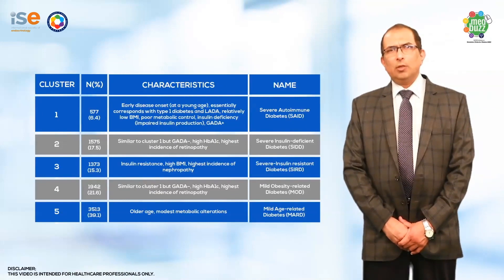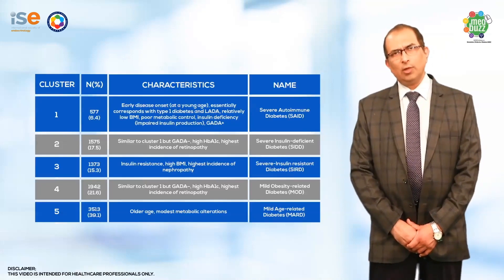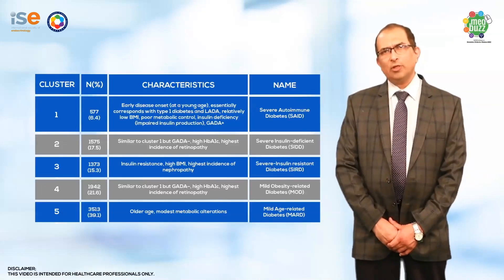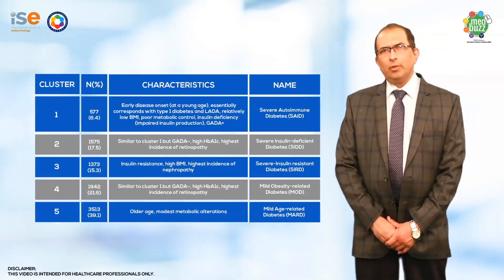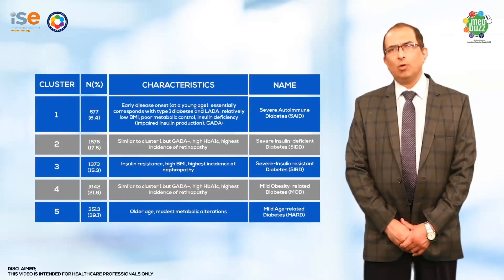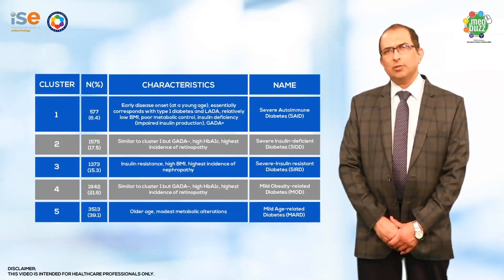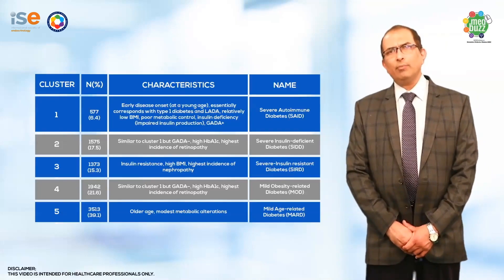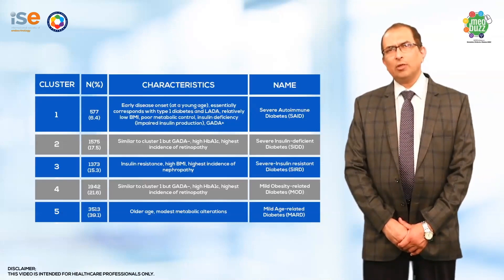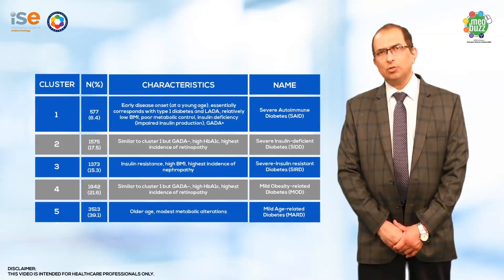The first group has very severe autoimmunity, corresponding to type 1 diabetes. Then there is a group with very severe insulin deficiency, which has a high risk of developing complications like retinopathy. Then there is a group with significant insulin resistance — when followed up, this group shows a higher risk of renal problems, including new onset of nephropathy or progression to end-stage renal disease.